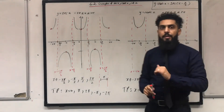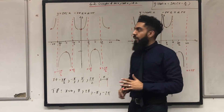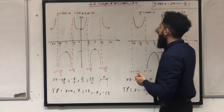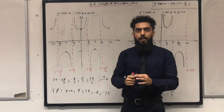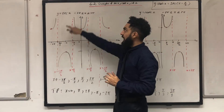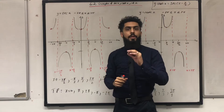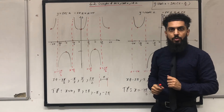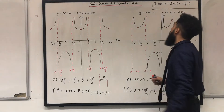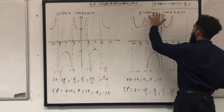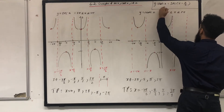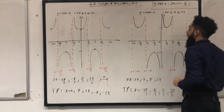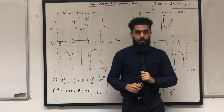That completes the sketch for y = sec x and y = cosec x. A tip for the exam: make sure you know how to sketch y = sec x, because you can then sketch y = cosec x using the relationship y = cosec x = sec(x - π/2).